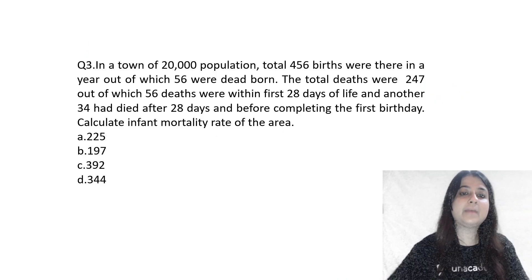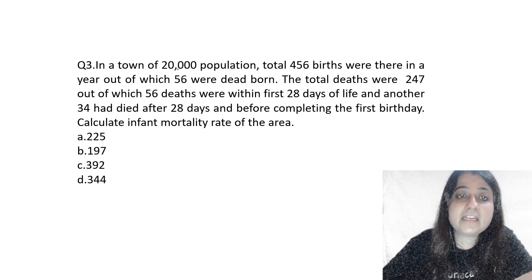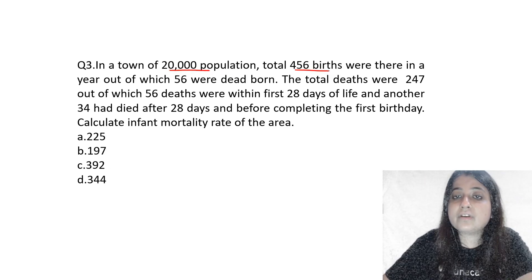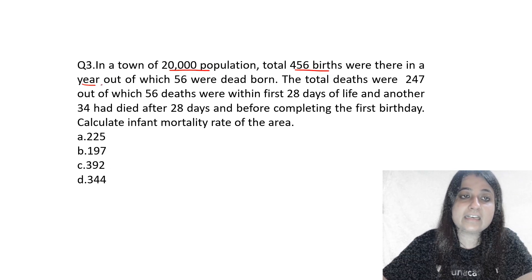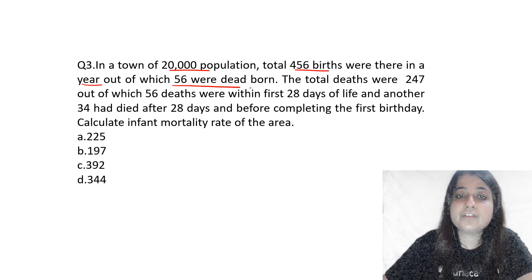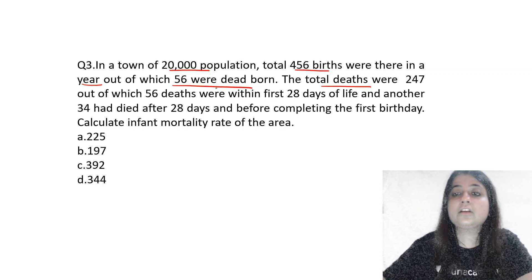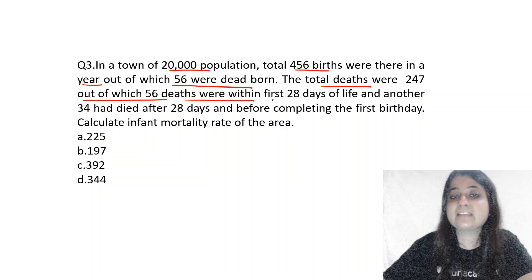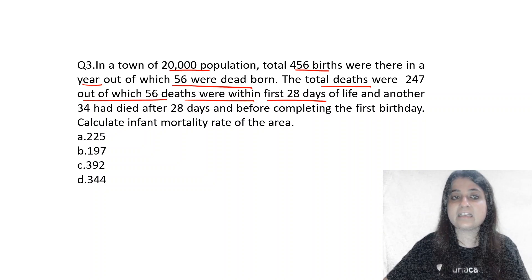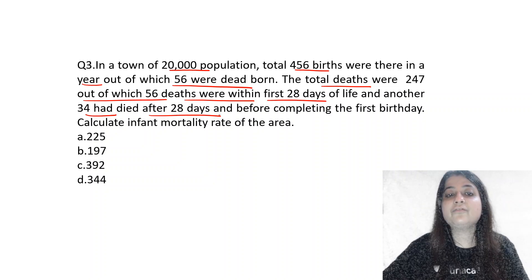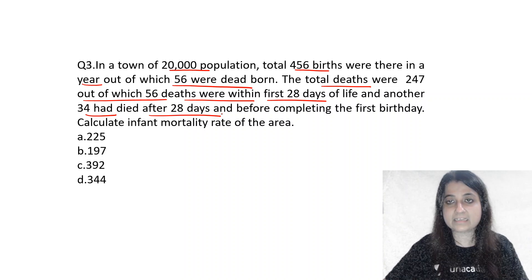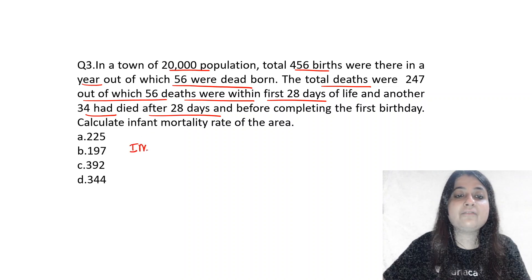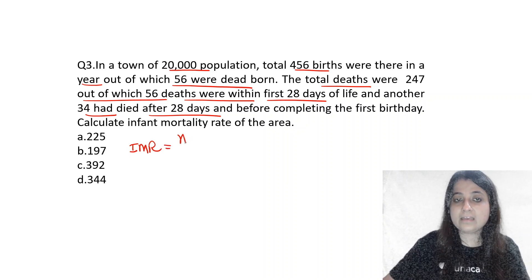Today I have given you some numericals. In a town of 20,000 population, there were 456 total births in a year, out of which 56 were dead-born. Total deaths were 247, out of which 56 deaths happened within the first 28 days of life, and another 34 died after 28 days but before completing the first birthday. What is the infant mortality rate?